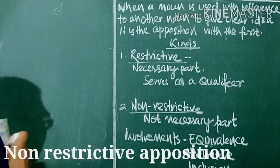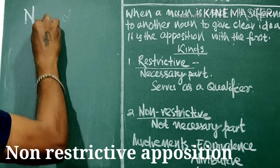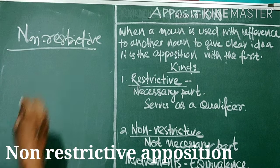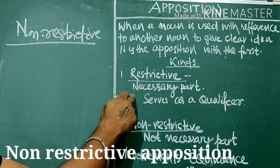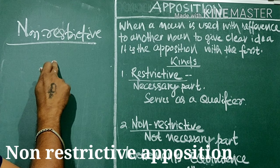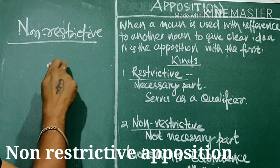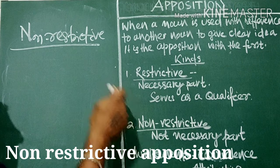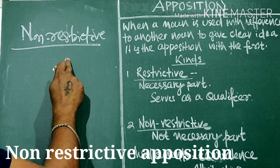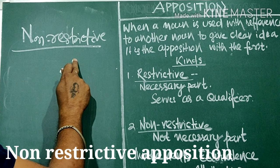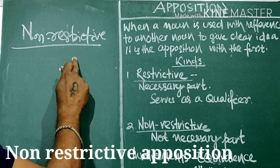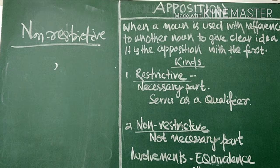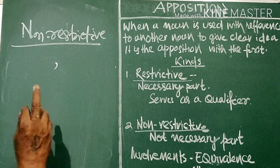Now we will discuss about non-restrictive Apposition. In restrictive Apposition, it is preceded by a definite article, sometimes by a determiner, and sometimes with omission of the determiner. Non-restrictive Apposition — also called unrestricted — has the second Apposition marked by a comma, and it is not a necessary part of the first.